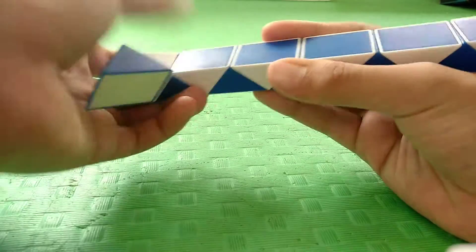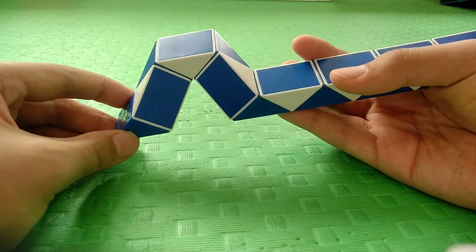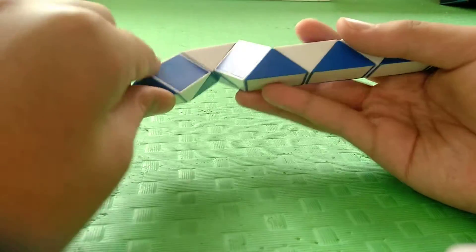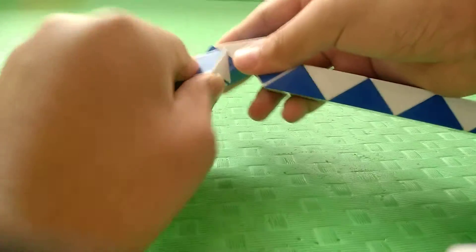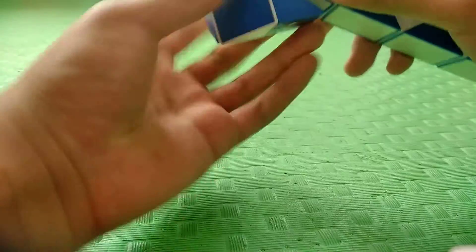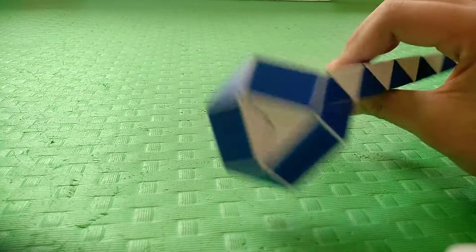And then from here you count two blocks and bend this one up, very simple. And now what you want to do is pull these two ends together. It's very simple, just pull this in and pull this in.